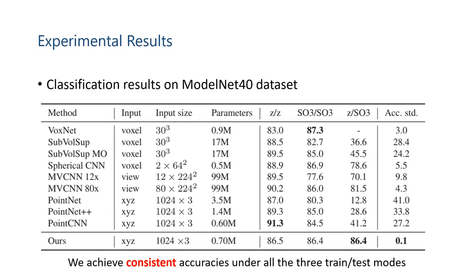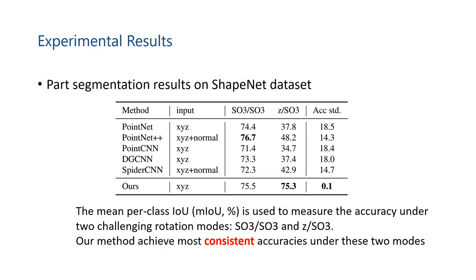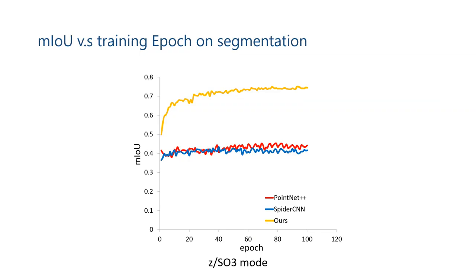This is the classification results on the ModelNet40 dataset. We can see that we are able to achieve consistent accuracy in all three modes. This figure shows the accuracy versus training epoch on classification. Our method can achieve higher accuracy than all other methods from the very beginning. Here are the part segmentation results on the ShapeNet dataset. Our method achieves consistent accuracies in the truly challenging rotation modes. Again, looking at accuracy versus training epoch on segmentation, our method achieves high accuracy.